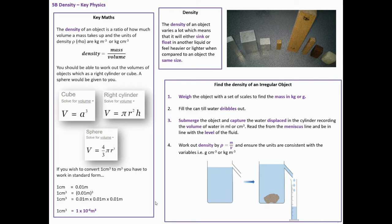This is an intro to IGCSE Density, unit of work 5b. The density of an object is a ratio of how much volume a mass takes up. The units of density ρ are kilograms per meter cubed or kilograms per centimeter cubed. Often chemistry uses kilograms per centimeter cubed, but in physics we tend to go for meter cubed.